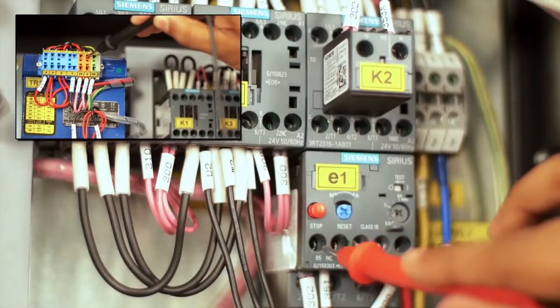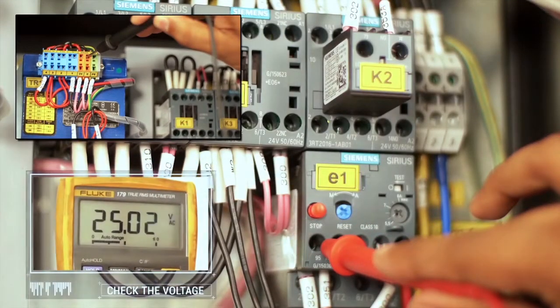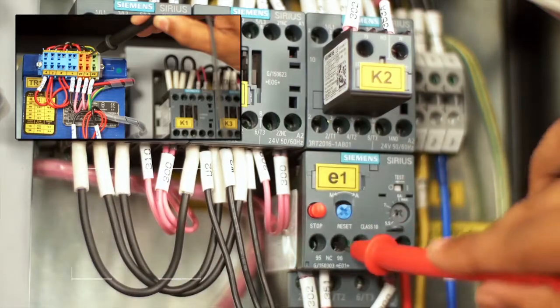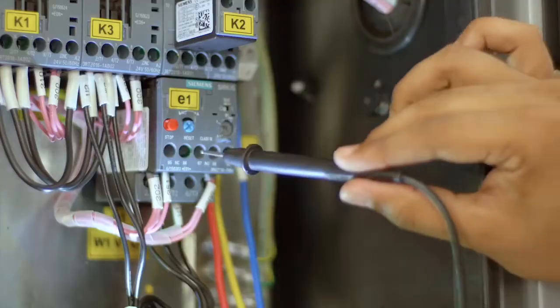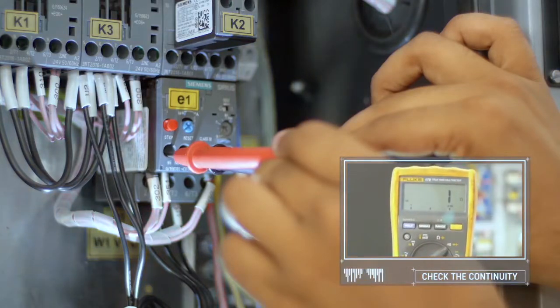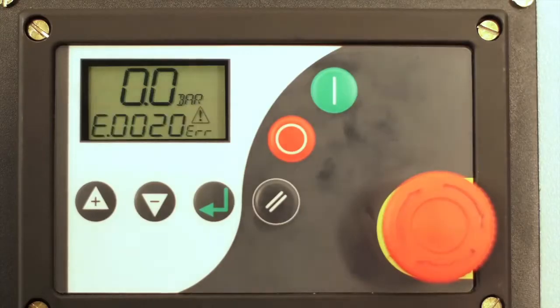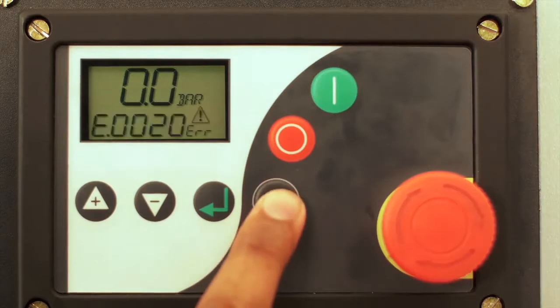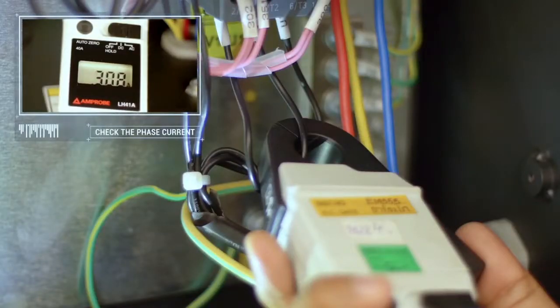Check the voltage of the overload relay point one and point two with respect to ground. Check the continuity of the overload relay. After resetting the main motor overload relay, check the phase current after OLR.